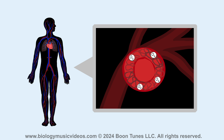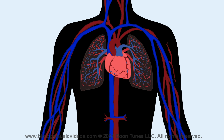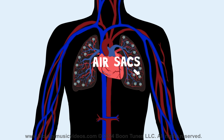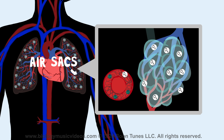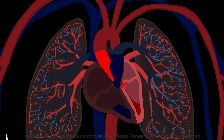Red blood cells are small biconcave discs which lack a nucleus and other organelles. They're mostly made of hemoglobin which transports O2, or oxygen. The oxygen is obtained from the lungs — alveoli, or air sacs. When O2 and hemoglobin bind, the blood turns bright red.